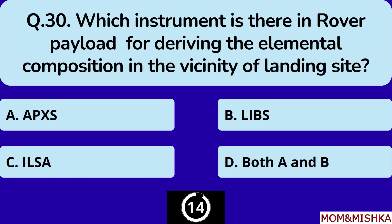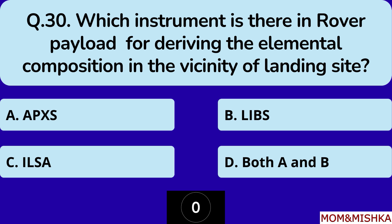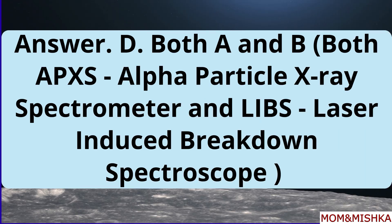Which instrument is there in the rover payload for deriving the elemental composition in the vicinity of the landing site? It's both A and B, option D.